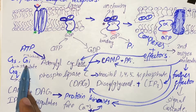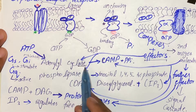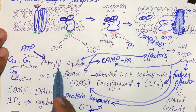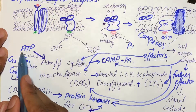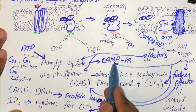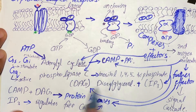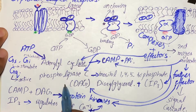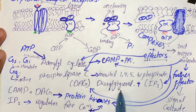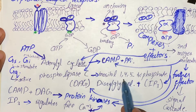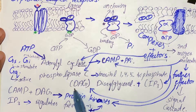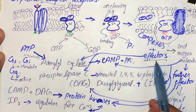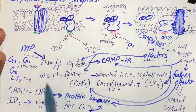GS and GI have a common effector called adenyl cyclase, which is an enzyme. When the alpha-GTP complex activates adenyl cyclase, there is conversion of ATP into cyclic AMP along with inorganic pyrophosphate. In GQ, there is activation of phospholipase C, which causes production of second messenger molecules: inositol-1,4,5-triphosphate (IP3) and diacylglycerol (DAG). cAMP, DAG, and IP3 are all second messenger molecules, whereas adenyl cyclase and phospholipase C are the cellular effectors.